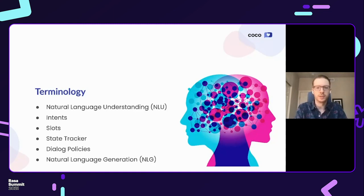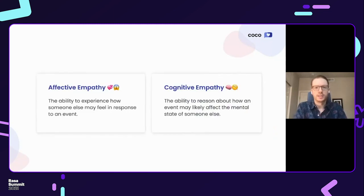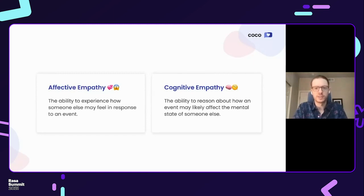Now let's move on to the topic of empathy. I'd first like to differentiate between two types: affective empathy, which refers to the ability to experience how someone else may feel in response to an event — this can result in caregiver burnout known as empathy fatigue — and cognitive empathy, which only requires an ability to reason about how events are likely to affect another person's mental state. A deficit in this reasoning results in a number of social communicative disorders, highlighting the need for this type of reasoning in dialogue. Since machines are currently unable to feel emotions, we'll focus exclusively on cognitive empathy.